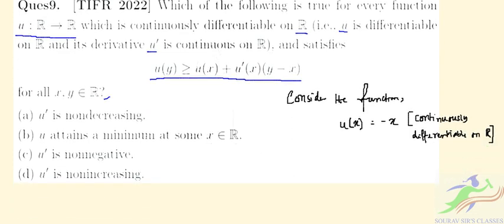u(x) is considered as -x. And also, we have u(y) is equal to -y, which is greater than or equal to -y equals -x + (-1)(y - x).